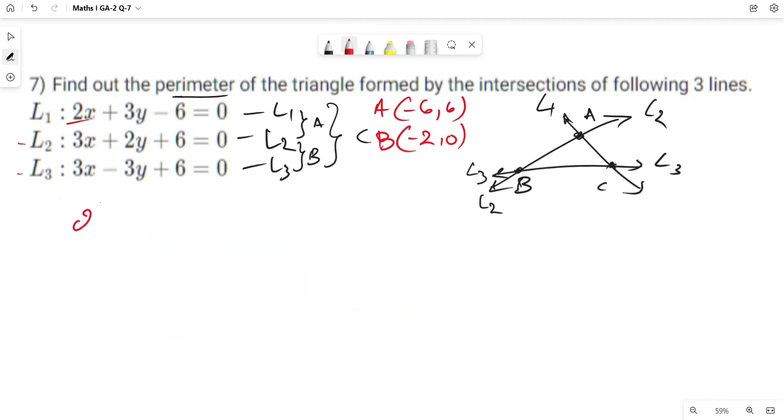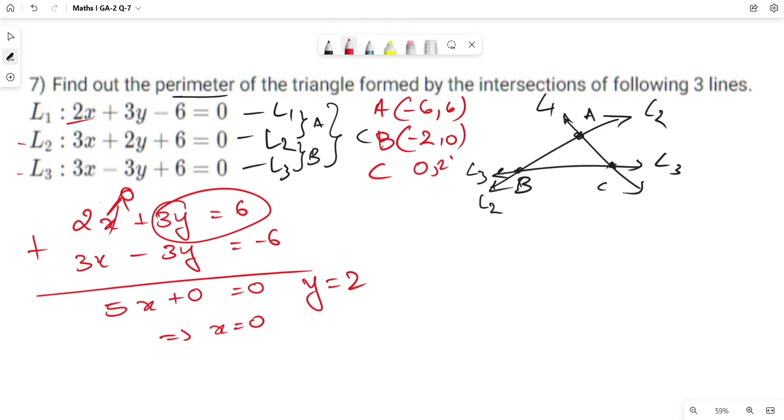For point C, we solve L1 and L3. 2x plus 3y equals 6 and 3x minus 3y equals minus 6. Adding both equations gives 5x equals 0, so x equals 0. Putting x equals 0, we get 3y equals 6, so y equals 2. Point C is (0, 2).